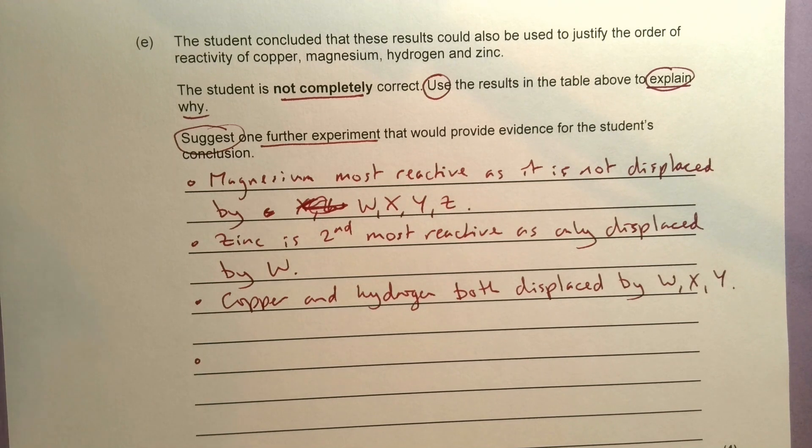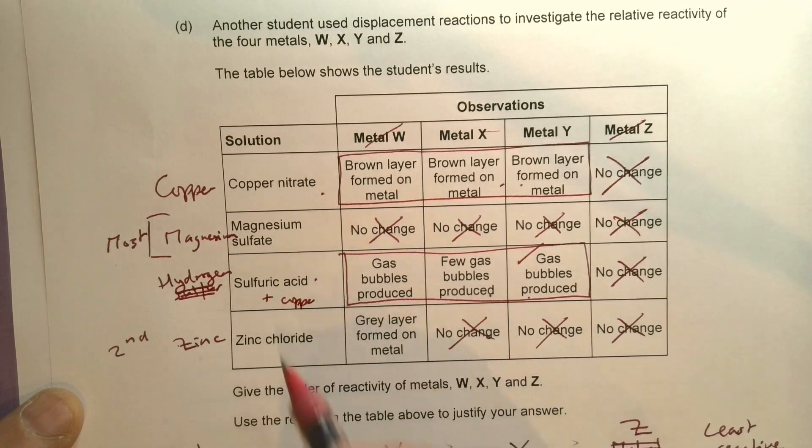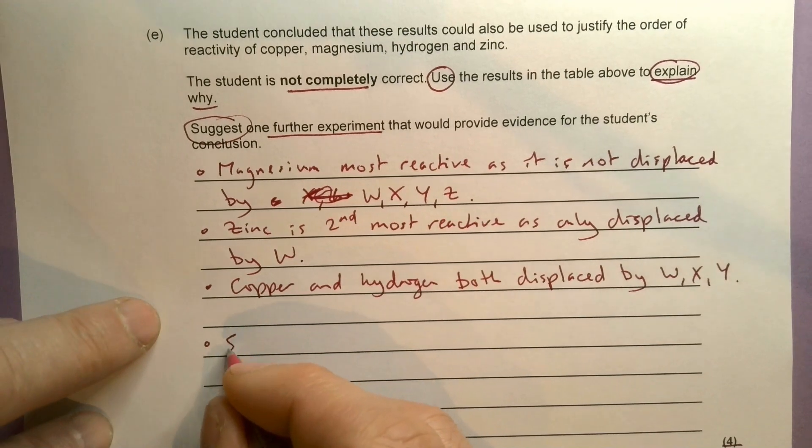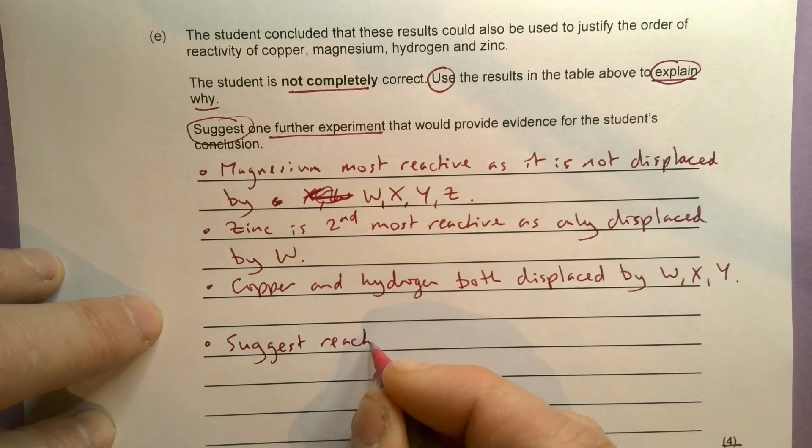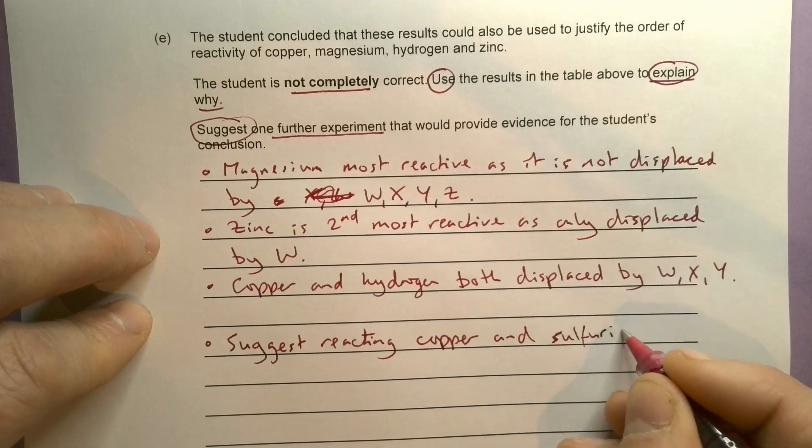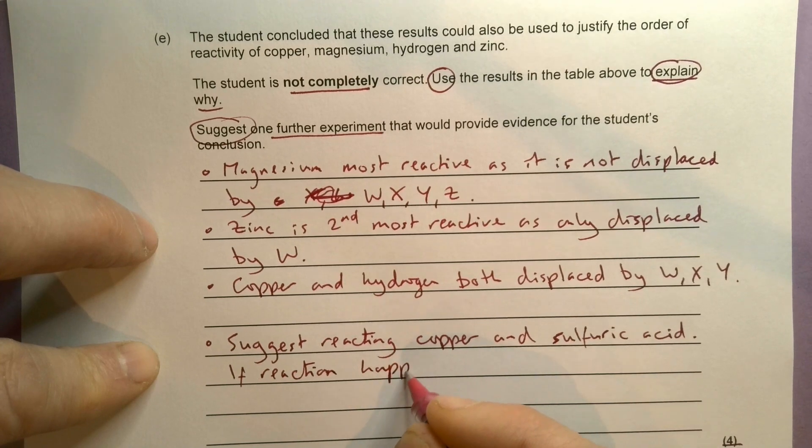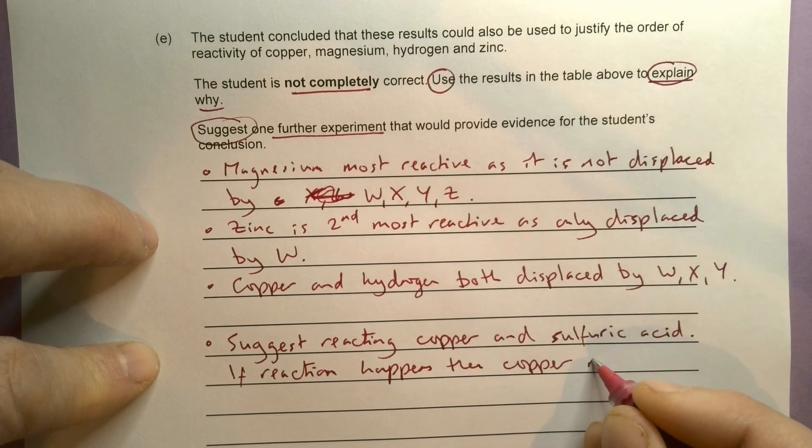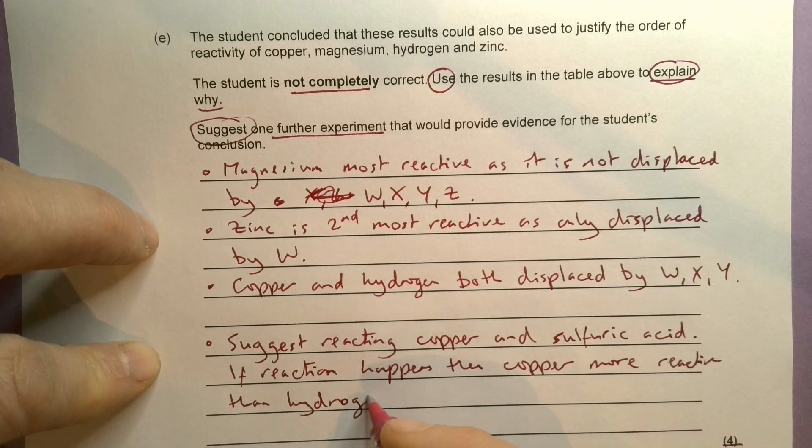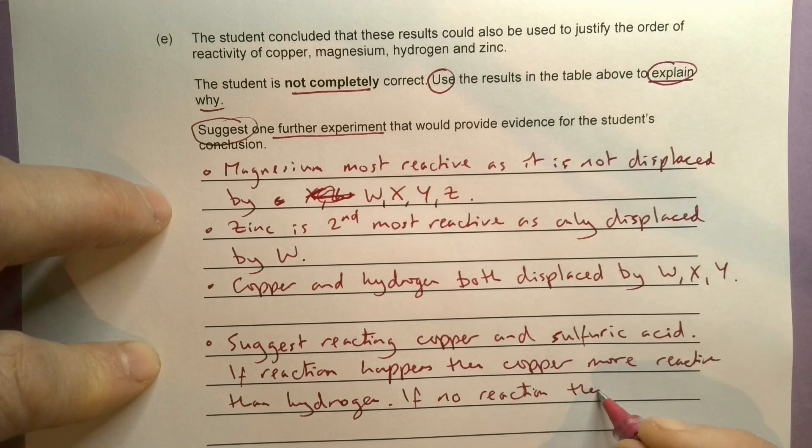The easiest thing to do here would be to put some sulfuric acid plus copper and see if that reacts. If it does react, then copper is more reactive than hydrogen. Suggest reacting copper and sulfuric acid. If reaction happens, then copper more reactive than hydrogen. If no reaction, then hydrogen more reactive.